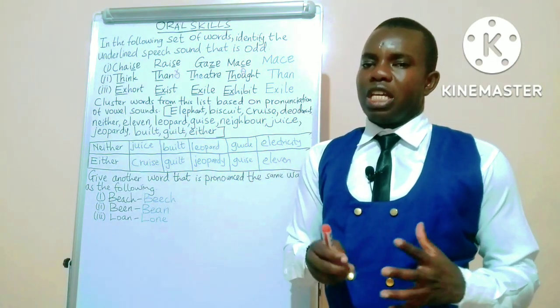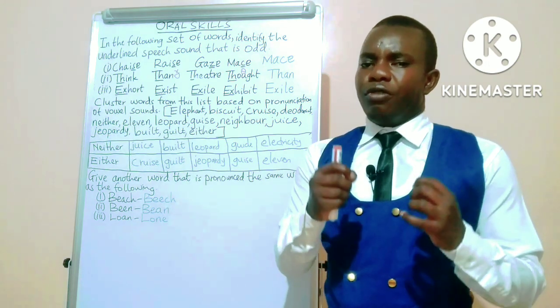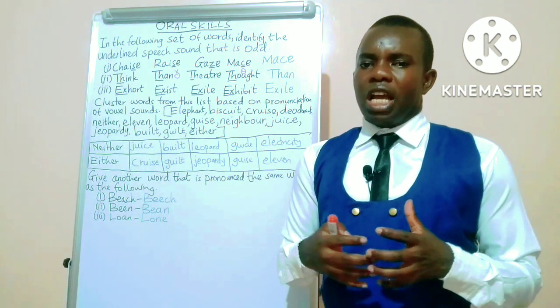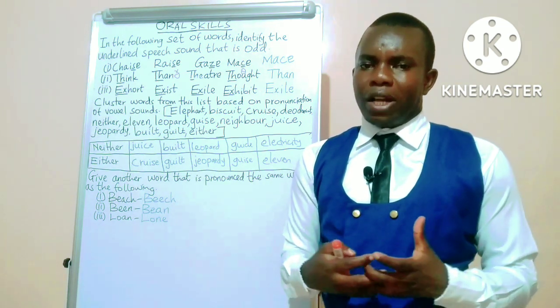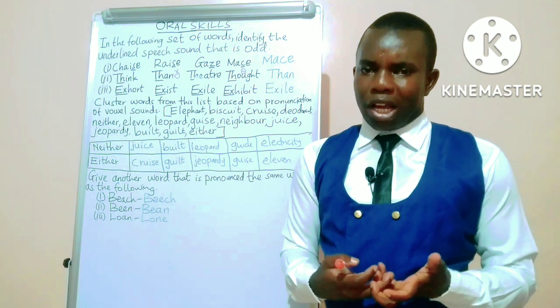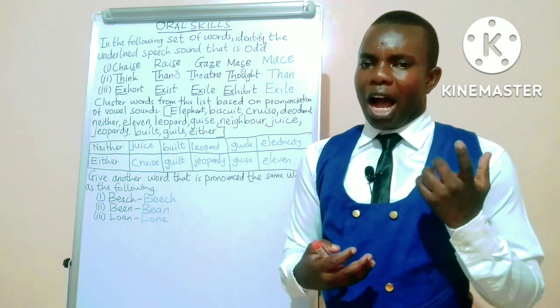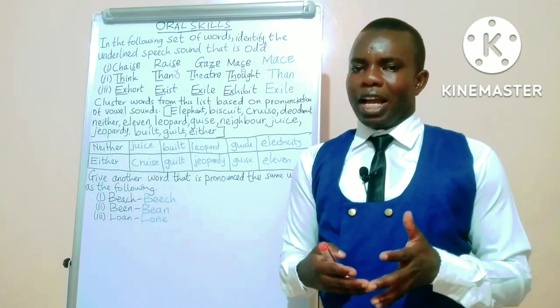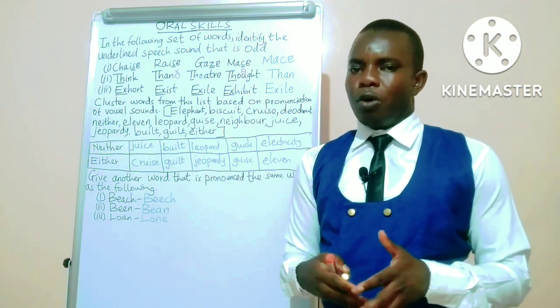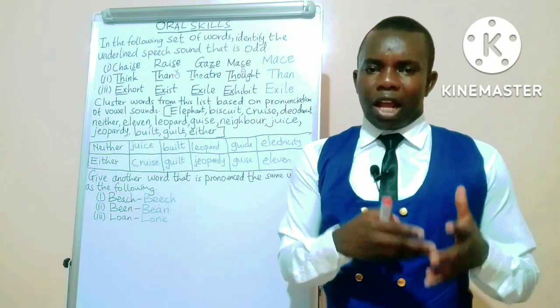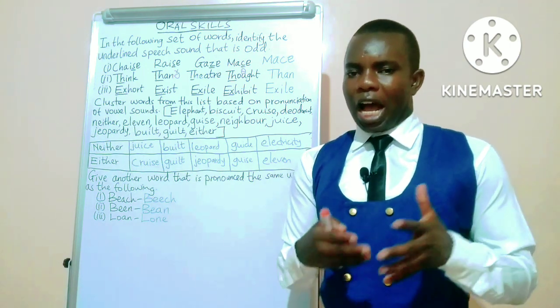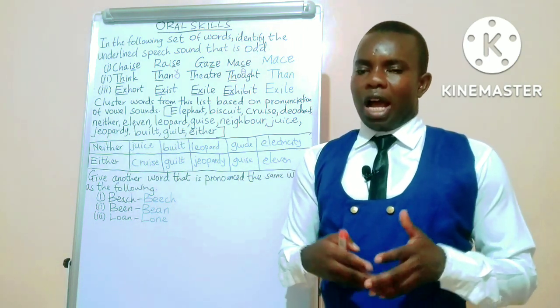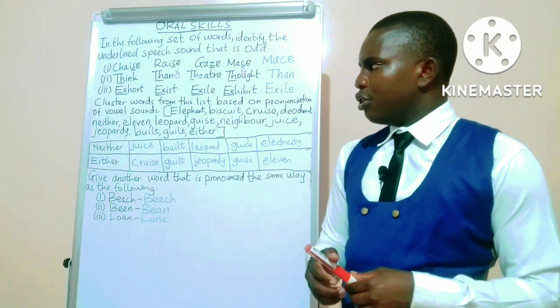The first example has been done for you, where we have neither and either. The vowel sound there is the diphthong /aɪ/. A diphthong is whereby two vowel sounds join together to form a single vowel. For example, we can have /u/ and /a/ brought together to form /ua/ sound, or /a/ and /ɛ/ to form /ɛə/, and so on.